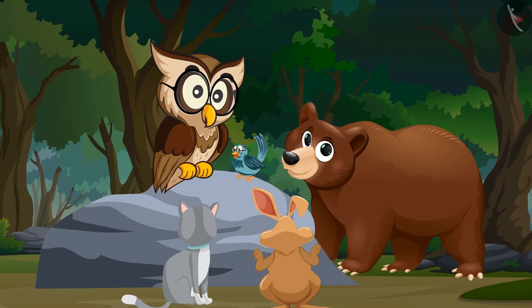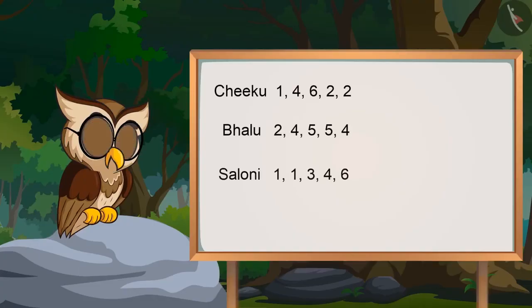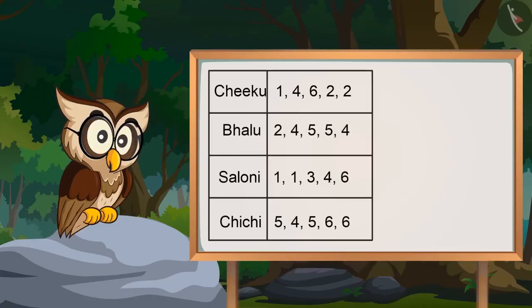What happened? Why are you taking so much time? Because we have to first check how many times each number has hit the dice. Perfect. And for this we can arrange and write our data in this way.